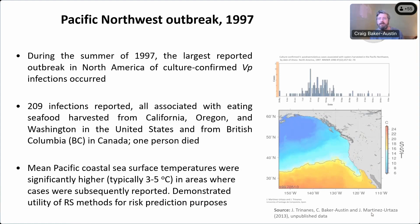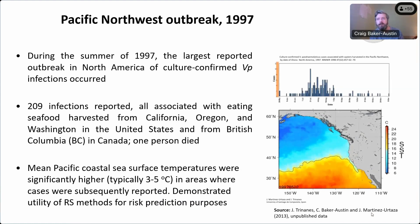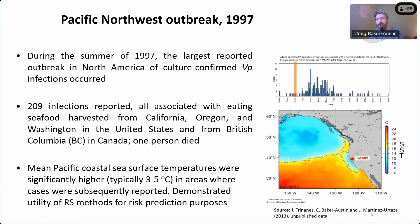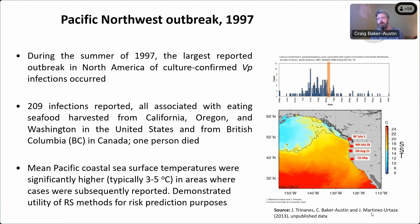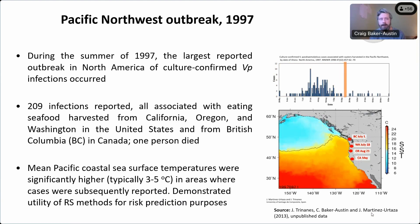This is from an outbreak in the United States in 1997 — one of the largest ever foodborne outbreaks reported in the States, with 209 infections. You can actually see this body of warm water moving along the coastline of the Pacific Northwest, and then those cases and infections being reported in both time and space. I think it demonstrates the utility of risk assessment methods for risk prediction purposes. When we've retrospectively looked at outbreaks, you do get this clear environmental signal — often high temperatures and low salinity — driven by things such as heat wave events.